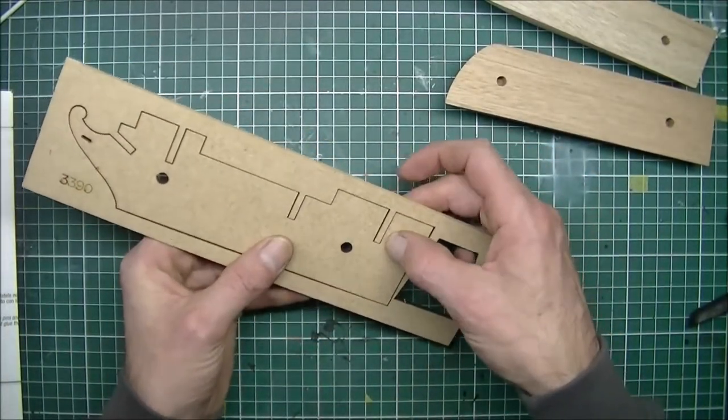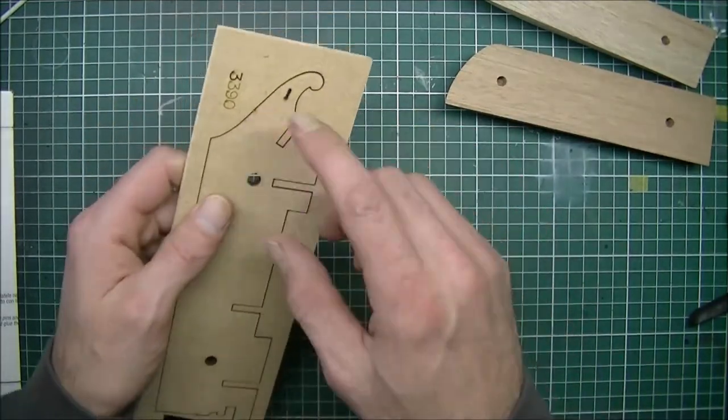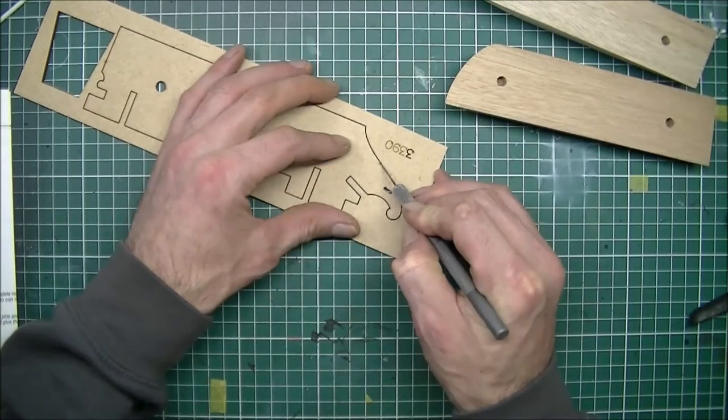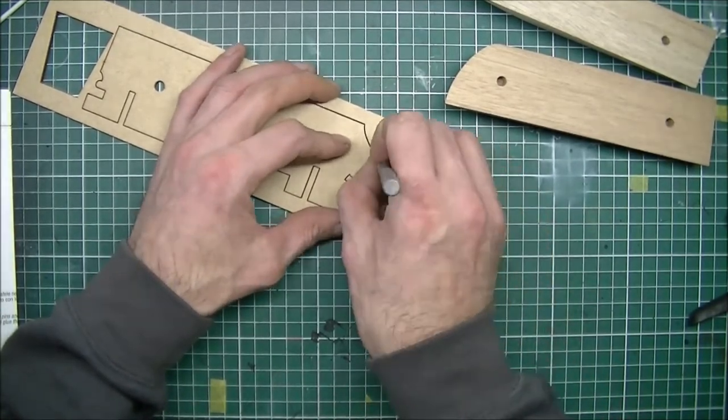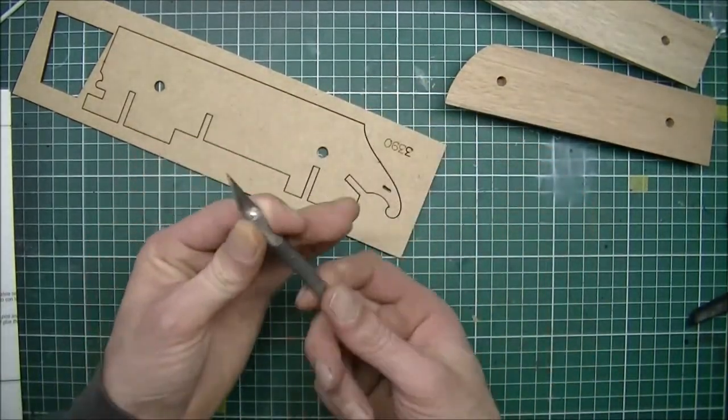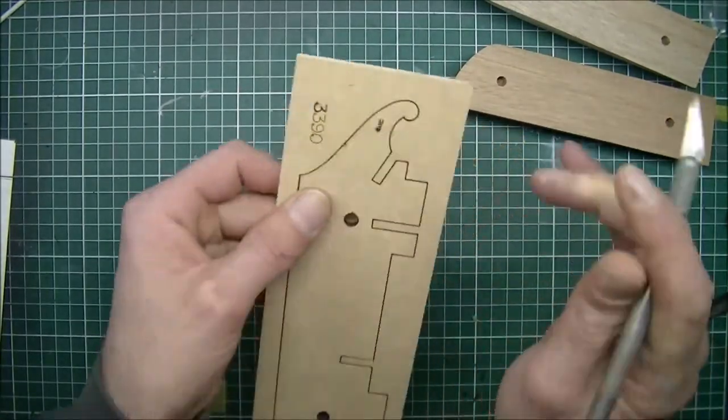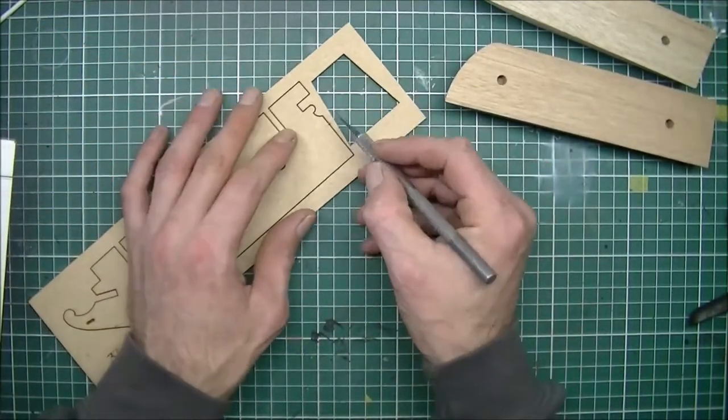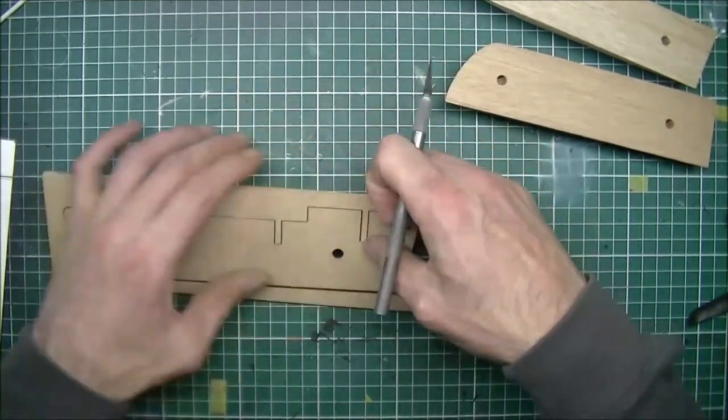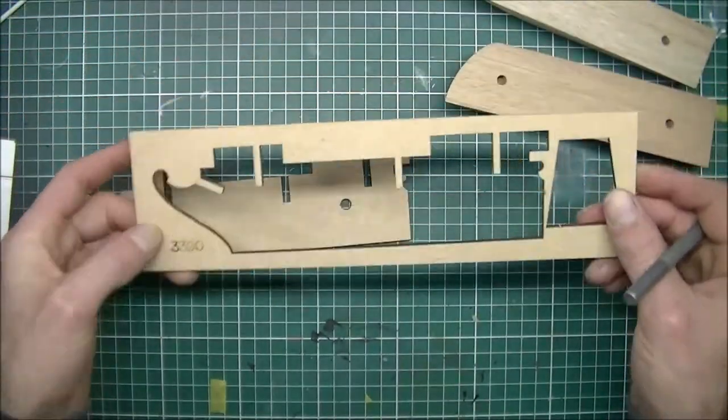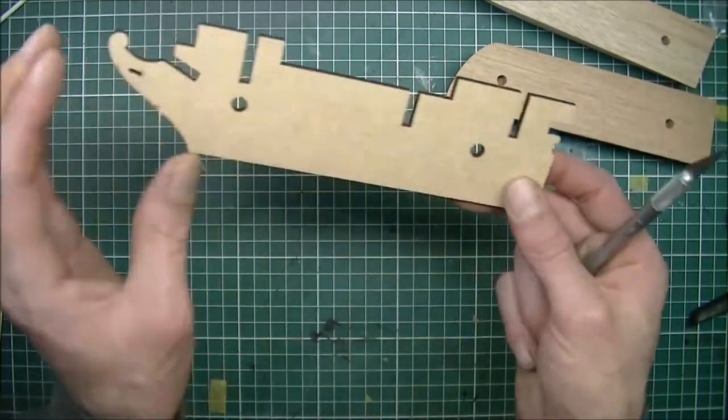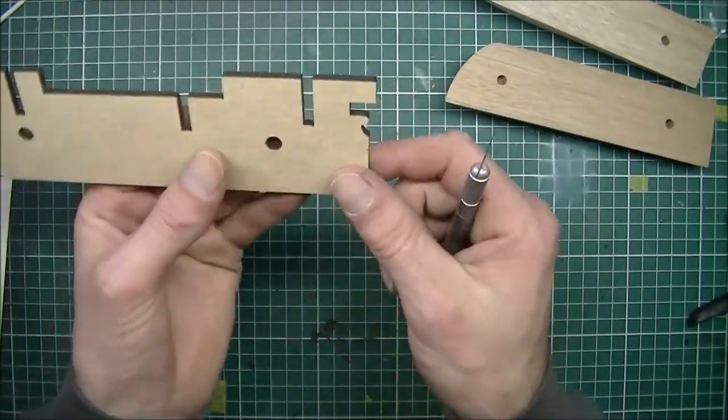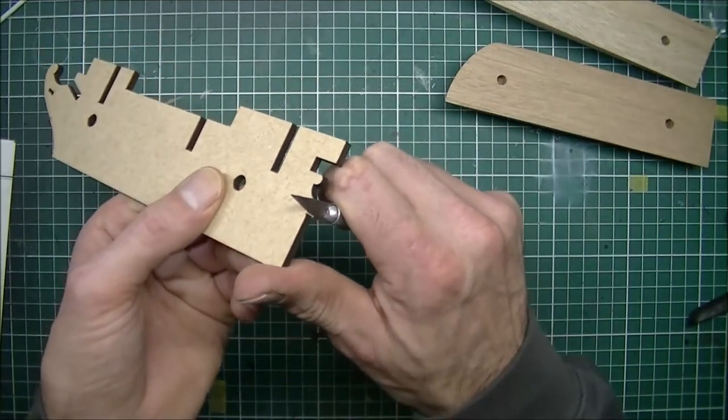You could probably just wiggle it out and then you might damage part of the kit. So I'm gonna use a hobby knife and very carefully just cut through this. Because these are laser cut, they have very thin attachment points. I would call them nubs but I'm not sure if that's the correct term.